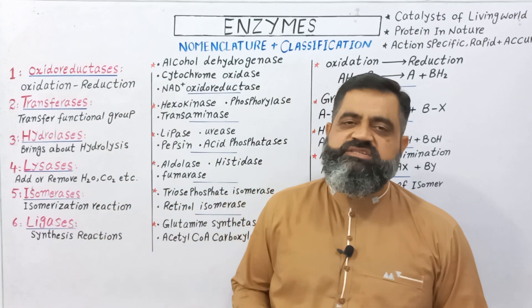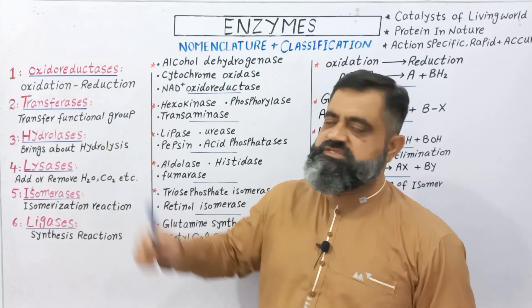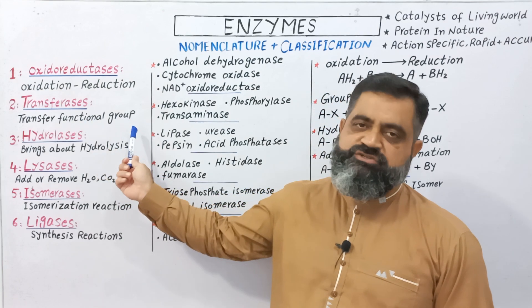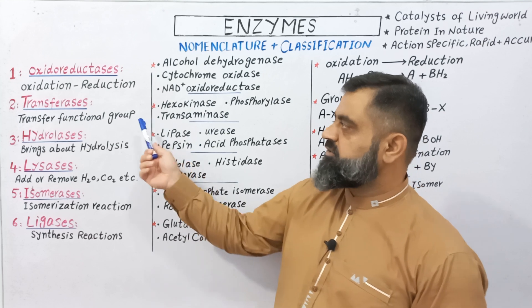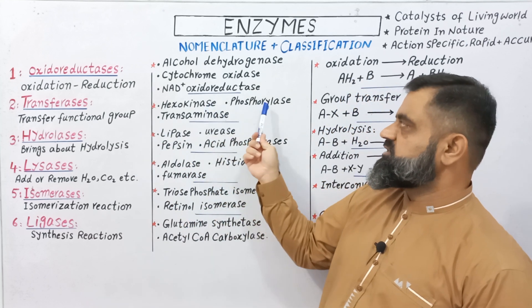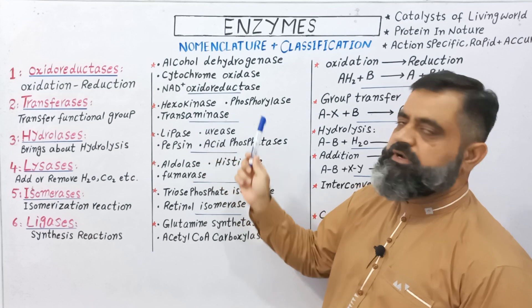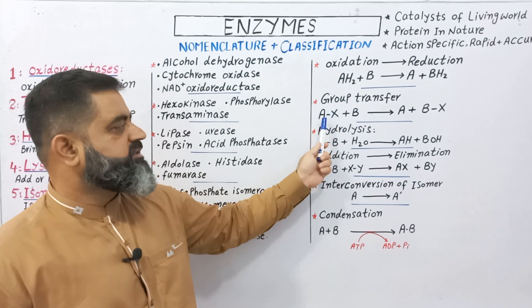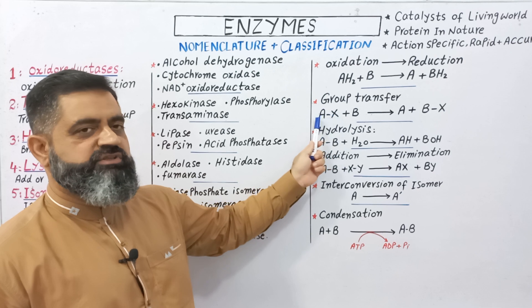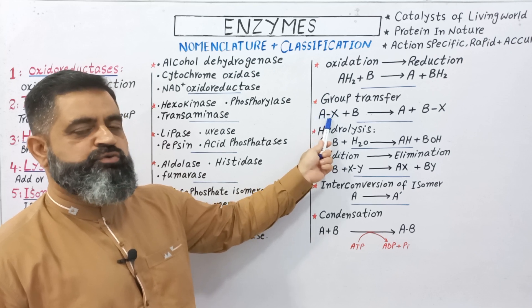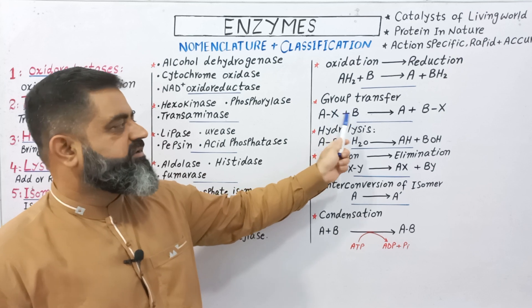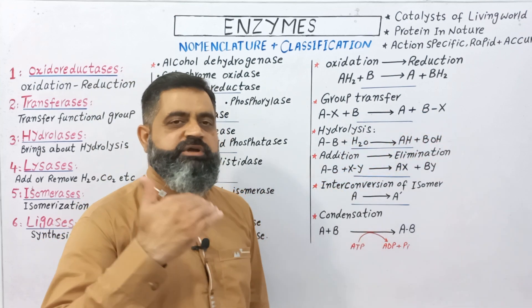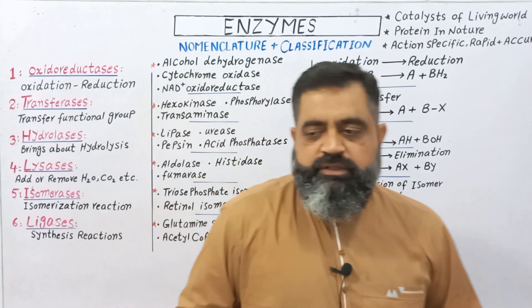The next category is transferases. These enzymes catalyze reactions in which a functional group is transferred from one molecule to another. Examples include hexokinase, phosphorylase, and transaminase. How they work: a molecule A has functional group X attached (A–X), and a second molecule B is present. After the reaction, A is separated and the functional group attaches to B, forming B–X. The functional group has been exchanged.